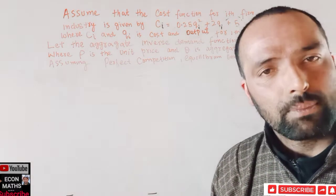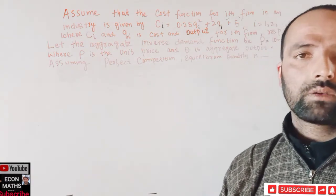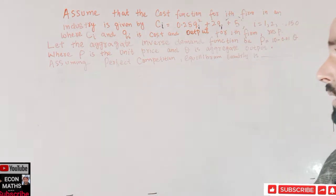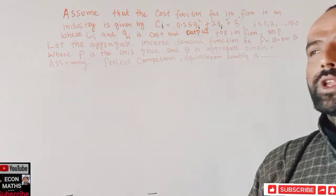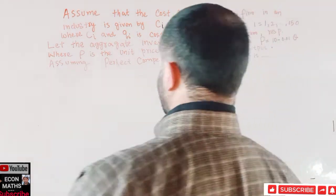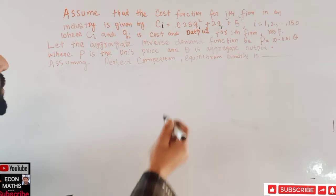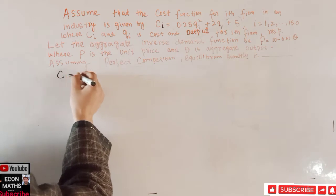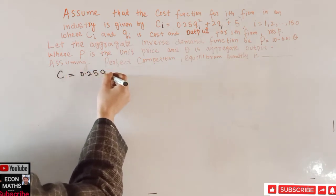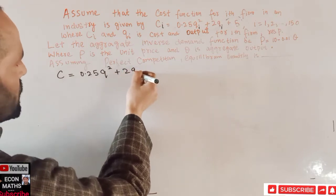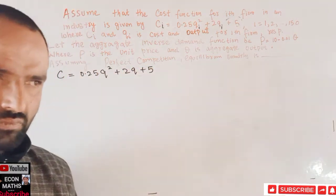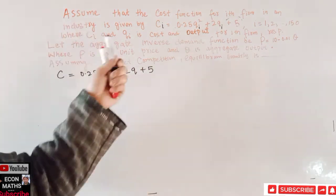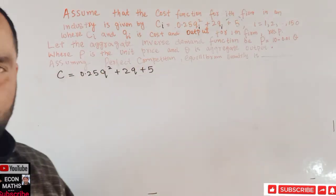We are given the demand function but not the supply function. We know equilibrium occurs where supply and demand intersect, so we need to derive the supply function first. The cost function for any firm (dropping subscripts since firms are identical) is: C = 0.25q² + 2q + 5.